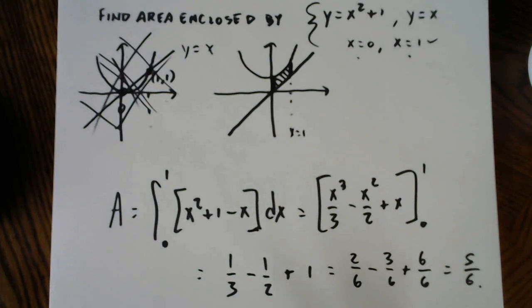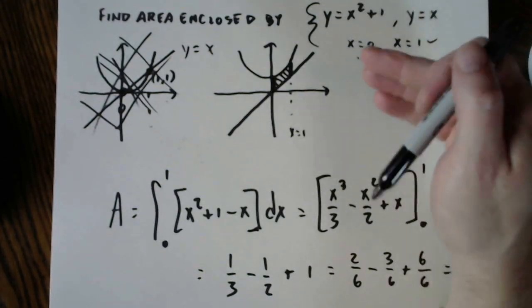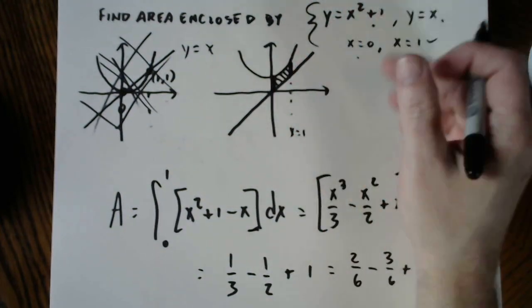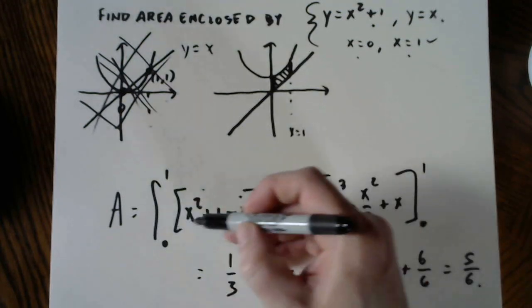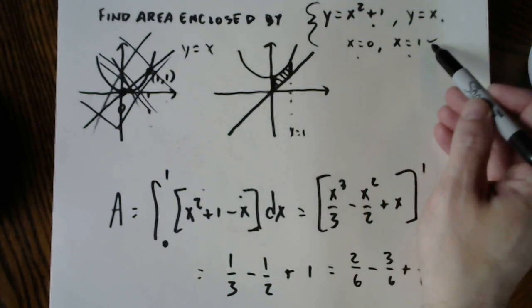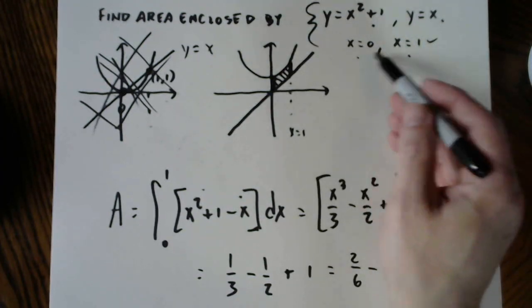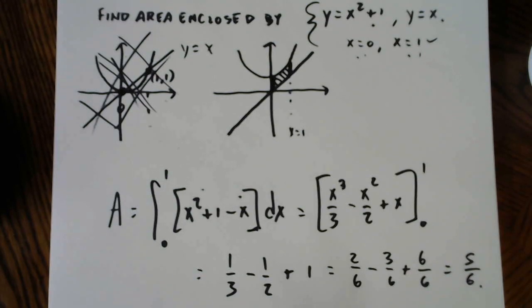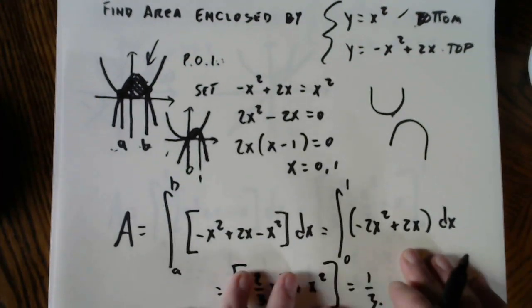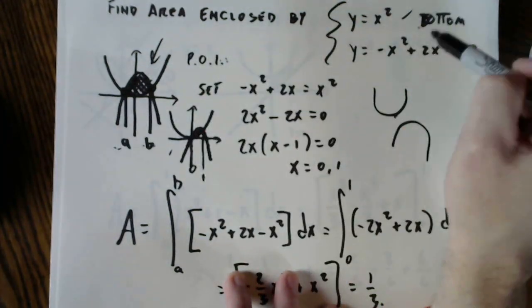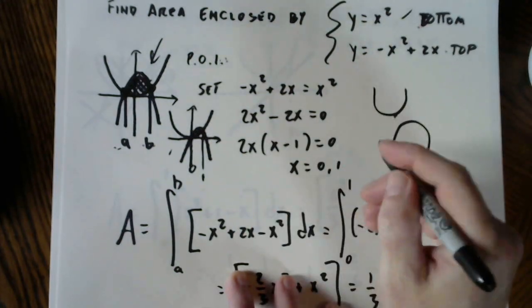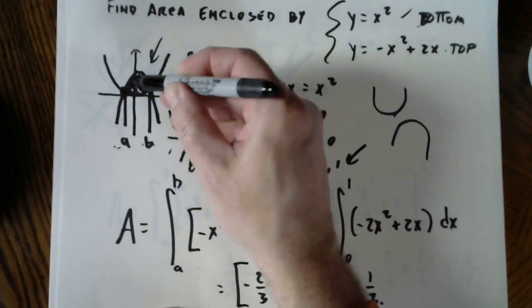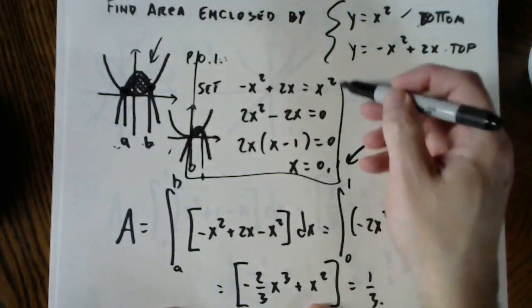Comparing the two examples: in both I knew which function is top and bottom from knowledge of the graphs — a line versus a parabola shifted up, or an upright versus an upside-down parabola. In the second example the limits were given as vertical lines. In the first they weren't, so I found the intersection points through algebra — those x-values became my limits of integration.